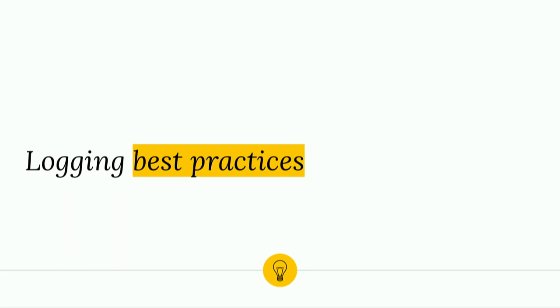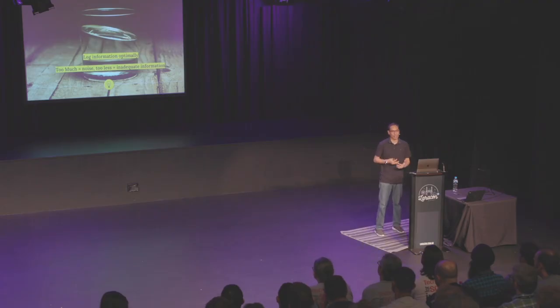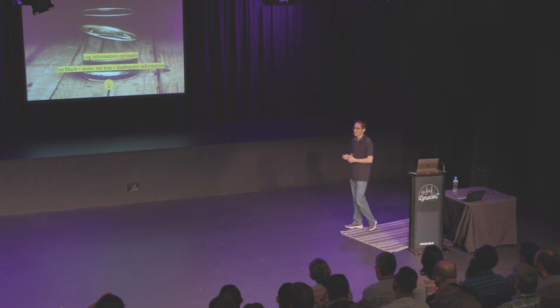Let's look at some logging best practices. First and foremost: log information optimally. This is quite a difficult balance — if you log too much it becomes noise, impossible to navigate. But if you log too little, it's not adequate enough to give you value. One solution is to have a verbose mode, like a feature flag, that on normal days stays off and only at certain times do you turn it on to get more detailed logs. Striking the correct balance is not easy.